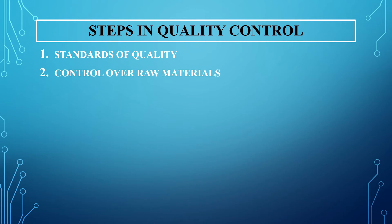The second step is control over raw materials. The quality of a finished product is generally influenced by the quality of raw material. If the raw material used is not of good quality, it will definitely affect the quality of the final product. Whenever raw material is received, it should be checked — even before purchase and again at the time of receipt — because getting good quality raw material is very important. If you do not get good quality raw material, it also affects the output.